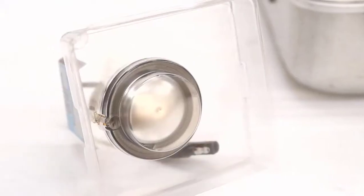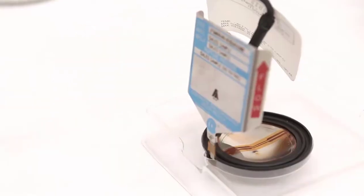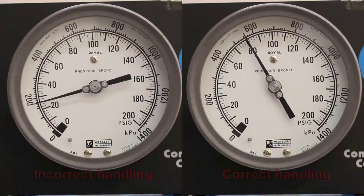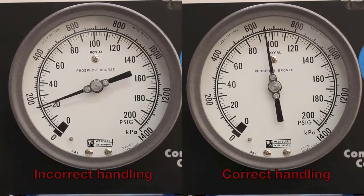Rupture disks are precision instruments and that's why they are packaged carefully. Any slight indent, even from laying on a desk, can have a major impact on the disk burst pressure. Handle and store your disks very carefully.